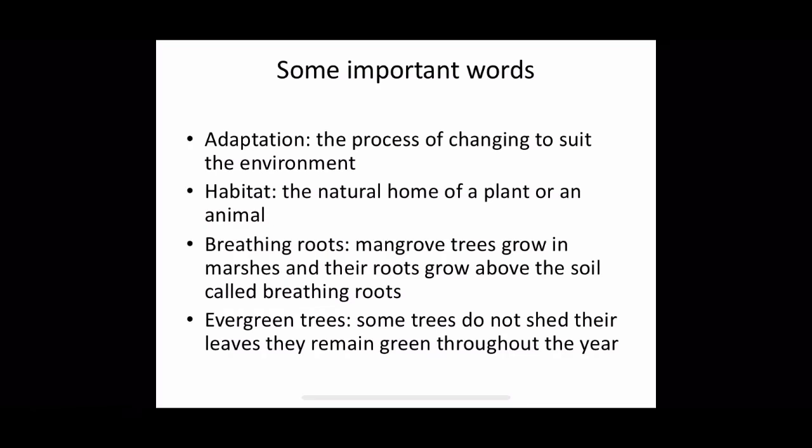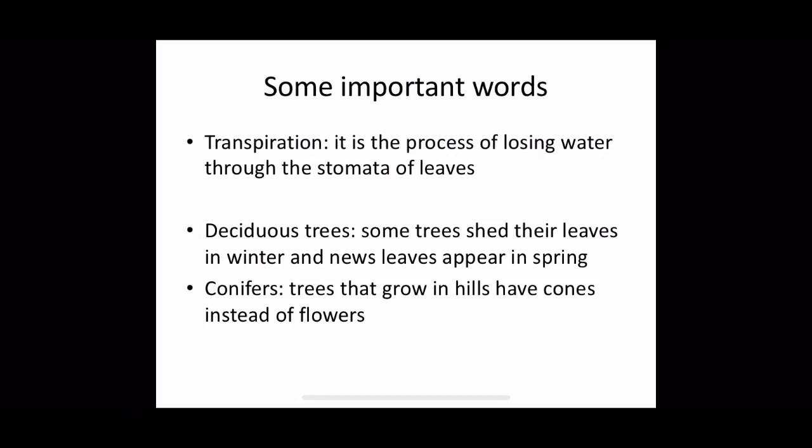Evergreen trees: some trees do not shed their leaves and remain green throughout the year — called evergreen trees. Transpiration: it is the process of losing water through the stomata of leaves, called transpiration. Deciduous trees: some trees shed their leaves in winter and new leaves appear in spring — called deciduous trees. Conifers: trees that grow in hills and have cones instead of flowers are called conifers.